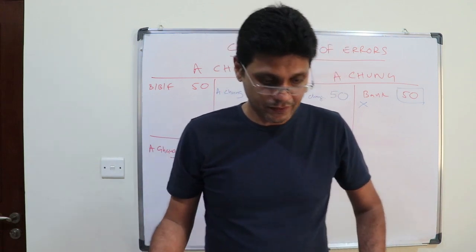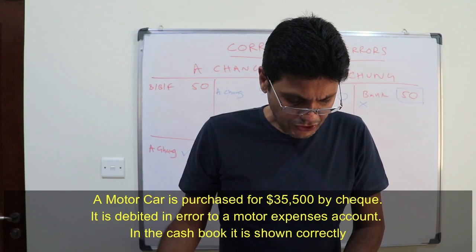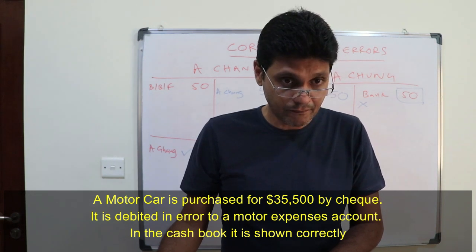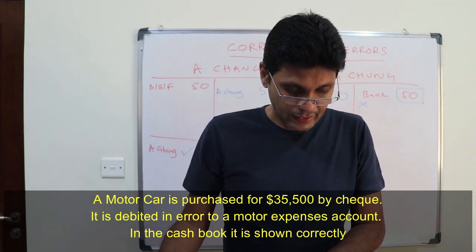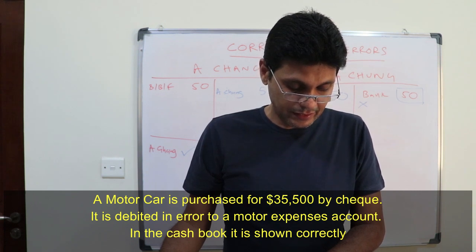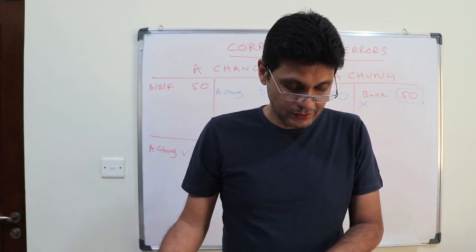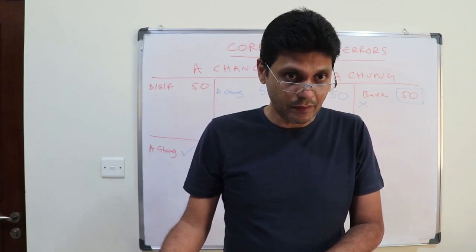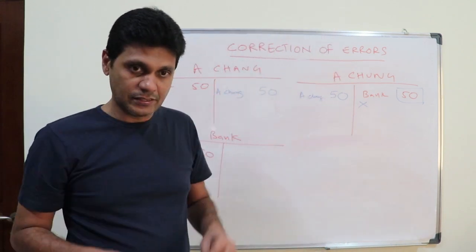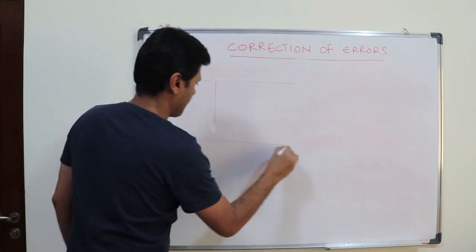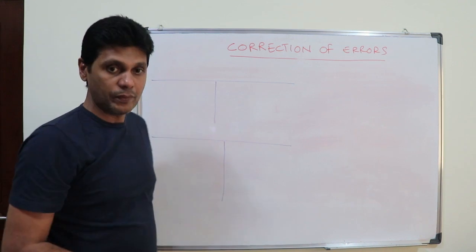Next question: a motor car is purchased for thirty-five thousand five hundred dollars by check. It is debited in error to a motor expenses account. In the cash book it is shown correctly. So what is the type of error? Error of principle — errors of principle.